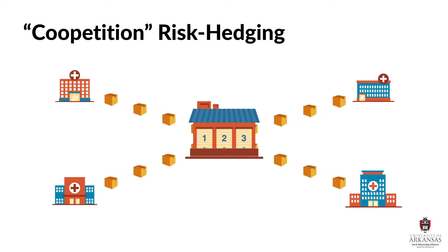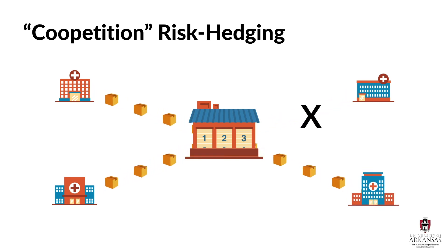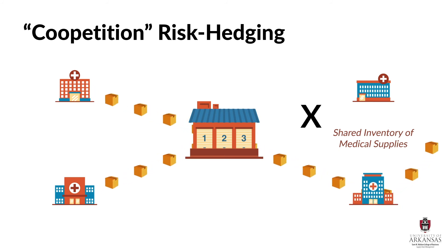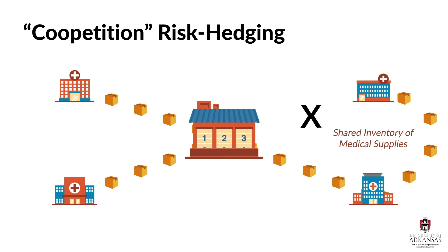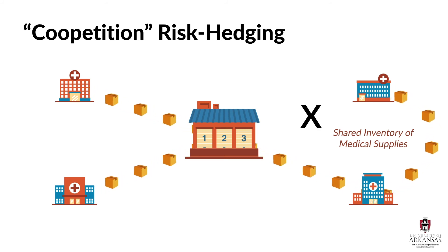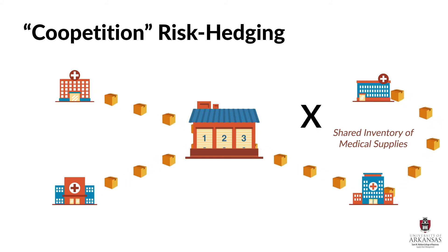Another variant of coopetition risk hedging strategy is to have individual locations share inventory with each other. Similar to the previous retail example, hospitals can also transship needed items to each other if the shared distribution center runs out. This type of resource sharing requires tremendous amounts of communication, collaboration, and coordination, but helps address supply disruptions.